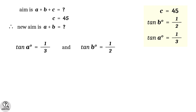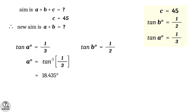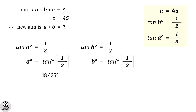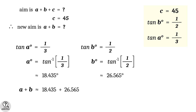If we have a calculator, we can compute a equal to tan inverse of 1/3, approximately 18.435 degrees, and b equal to tan inverse of 1/2, approximately 26.565 degrees. So a plus b is approximately 18.435 plus 26.565, which equals 45. But in fact the value of a plus b is exactly 45.